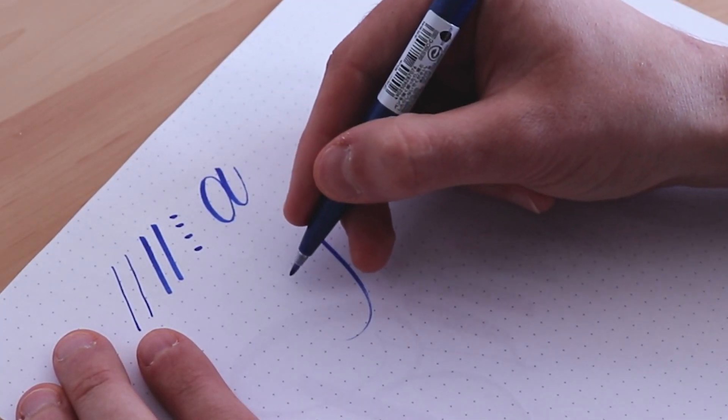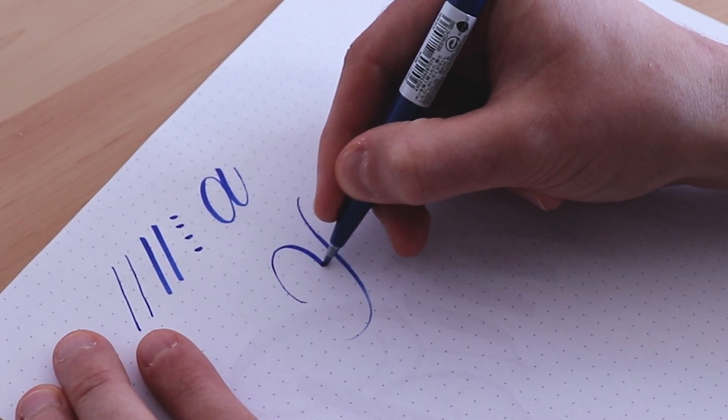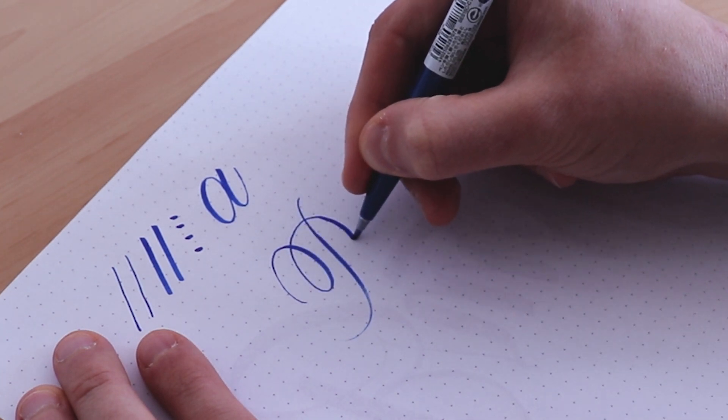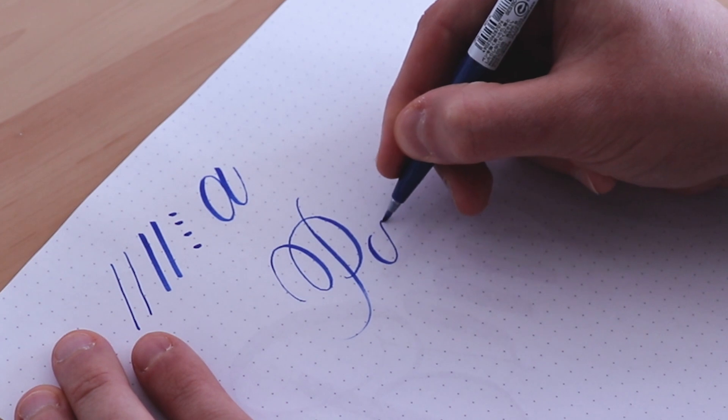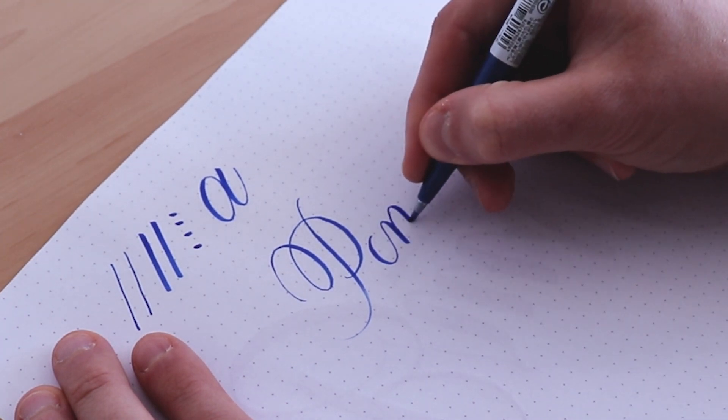The Pentel Fude Touch is another popular choice for brush calligraphy. The small and soft nib makes it extremely easy for beginners to use it. The ink is also water-based and fully blendable with other colors.